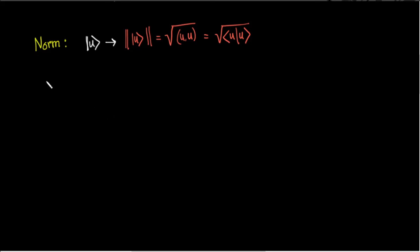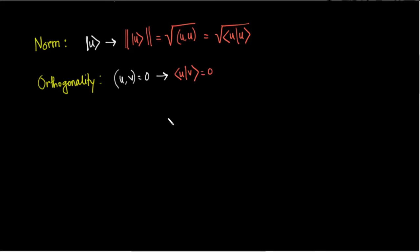Using the Dirac notation, how can we write the condition of orthogonality? We had the condition that two vectors' inner product will be zero. Using the Dirac notation, this will be written as u v equals zero. Simple as that.